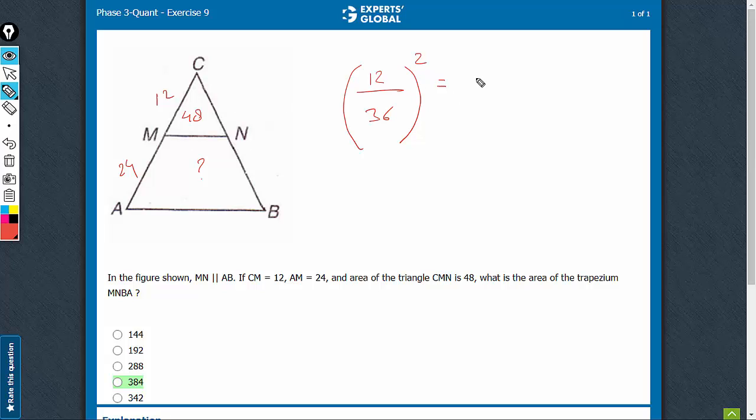The smaller triangle has an area of 48. Let this area be A. This is going to be 1 upon 9. 1 upon 9 is equal to 48 upon A. Therefore, A is 48 into 9, 432.